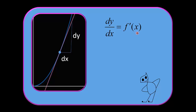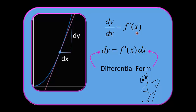Now it follows that we could multiply both sides by dx, and we get this: dy equals f prime of x dx. This is what I'm calling differential form. We've been using this Leibniz notation before — dy, dx — and we've been told this is not a fraction, it's notation.